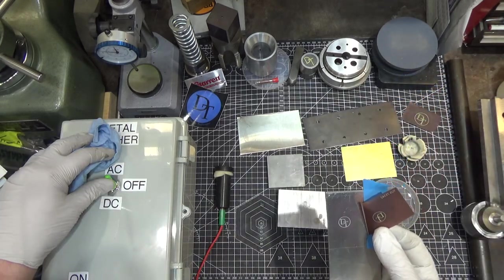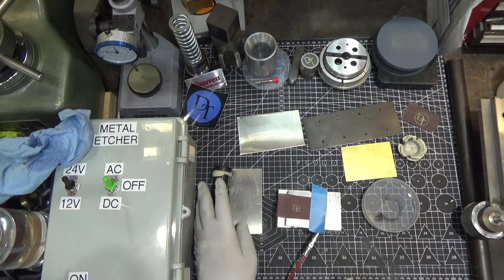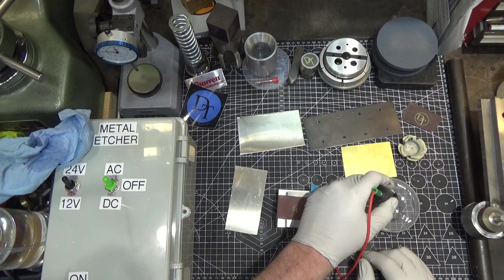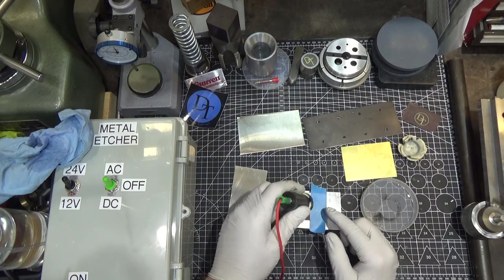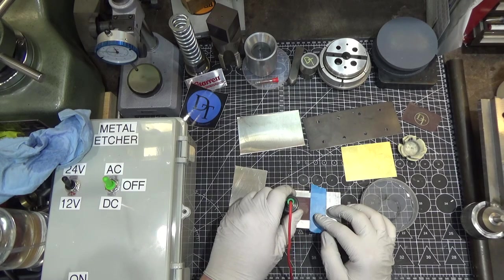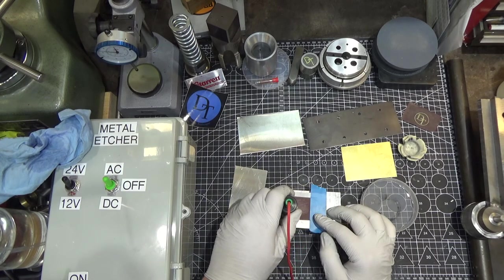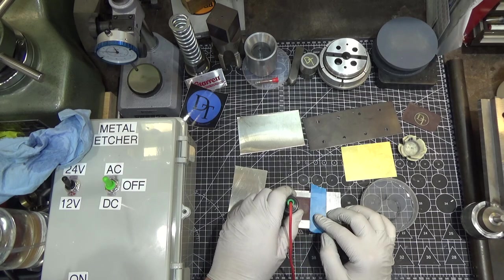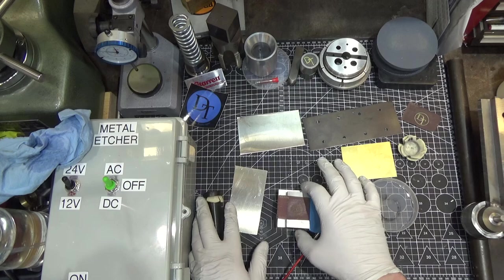I think that's respectable. Let's move on to the next material. Next up is the chunk of carbon steel. It's mild steel actually and we're going to do it on 24 volts AC. One, two, three, four, five like half second passes.